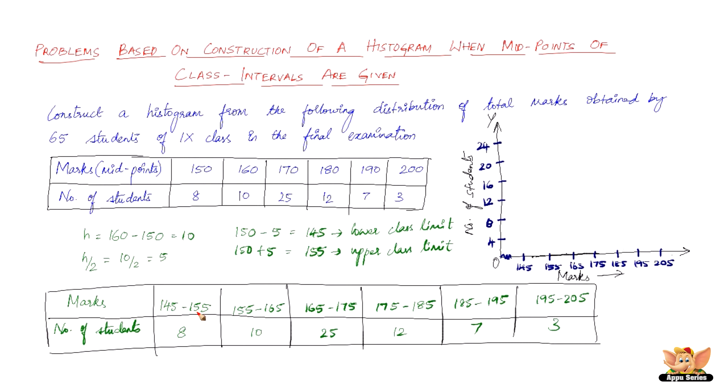So anyways, the first histogram is 145 to 155, which has got a frequency of 8. So here it is.